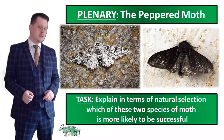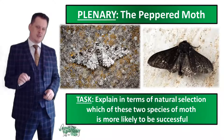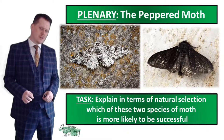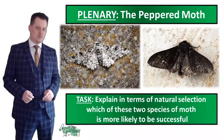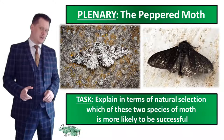Both of these are peppered moths — we've got our grey-looking moth and our black moth. Remember to start by talking about the variation. Which one is more likely to survive? Which one is more likely to reproduce? Which one is more likely to pass on their genes to their offspring? And what characteristic is it which has made that moth successful? If you've got any really good answers, I'd like you to stick them in the comments below.